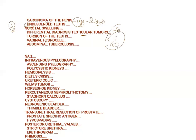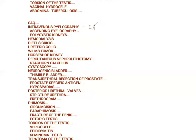Vaginal hydrocele is a hydrocele in females because of dilation of the labia. Abdominal tuberculosis can also affect the kidney. In the kidney, an investigation called IVP — intravenous pyelography — is required to know whether the kidneys are functioning or not. Ascending pyelography is when dye is pushed through the urethra, bladder, and ureter into the kidney to delineate the kidneys.